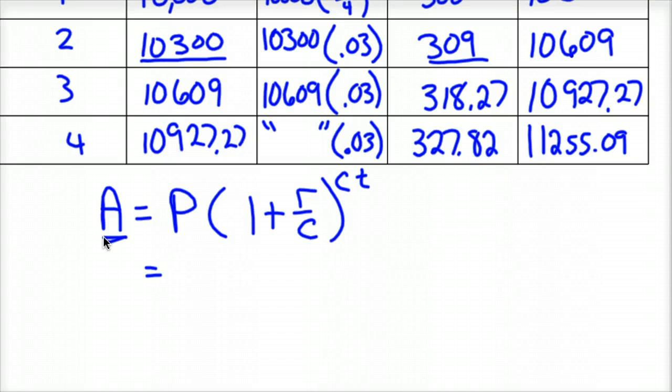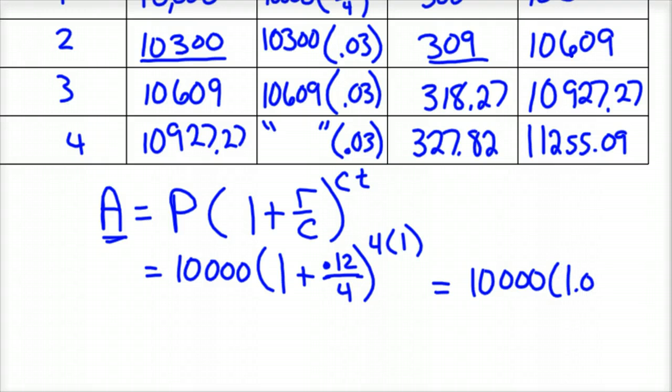So our amount, A is the amount of interest, or amount total we'd end up with. You plug in $10,000 for principal. 1 plus your rate is 0.12. Divided by your compounds. C is 4. And then to the 4 times, we only have 1 year of interest that we're doing this time. So 4 times 1 is 4. So you'd have 10,000 times 1.03 to the 4th power. And when you do 10,000 times 1.03 to the 4th power, you get 11,255.09.